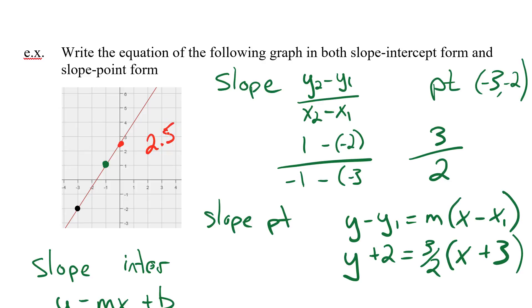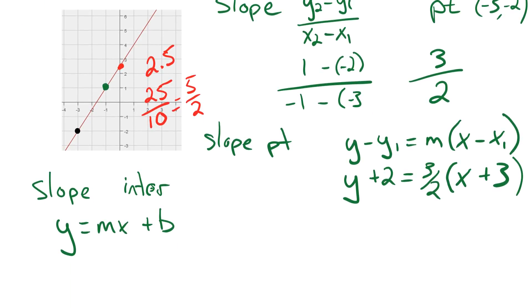But we don't, we never like having a decimal when we're working in these forms. So we're going to change this to a fraction. So to change 2.5 to a fraction, we're going to put it as 25 over 10, which would reduce to 5 over 2. You can divide both 25 and 10 by 5. So now my slope intercept form, y equals 3 over 2x plus 5 over 2.